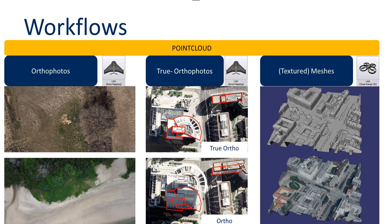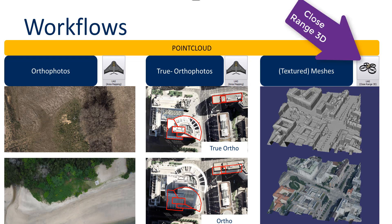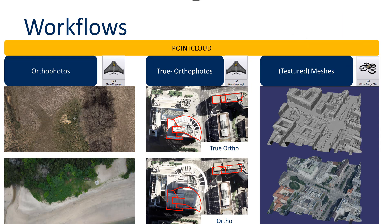The third workflow is the close range 3D project type, where we will extract a point cloud and a mesh or textured mesh, which is a typical result for close range projects.